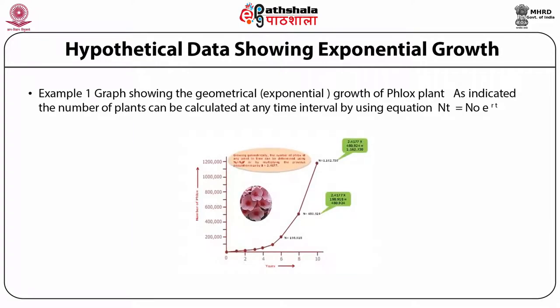This graph shows geometrical or exponential growth of a flocks plant. As indicated, the plants are calculated at several intervals using the formula Nt = N0 · e^(rt). The population growth rate begins very slowly and then increases exponentially from 480 to 1162.